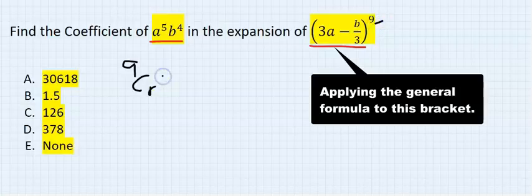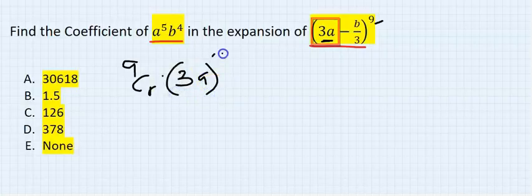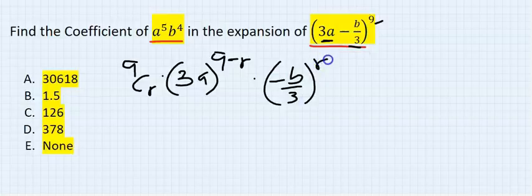I'm going to have 9 combination r because the highest power here is 9. The next is 3a, everything to the power of 9 minus r. The next is minus b over 3, everything to the power of r.